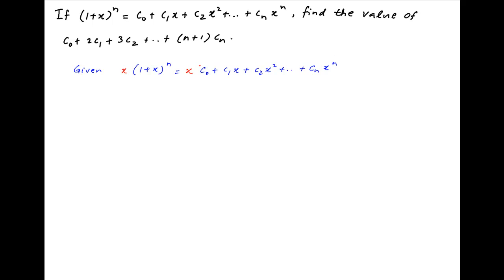Now multiply both sides by x. Therefore x times (1 + x)^n is equal to C0·x plus C1·x² plus C2·x³ plus and so on, and the last term is Cn times x raised to the power n+1.